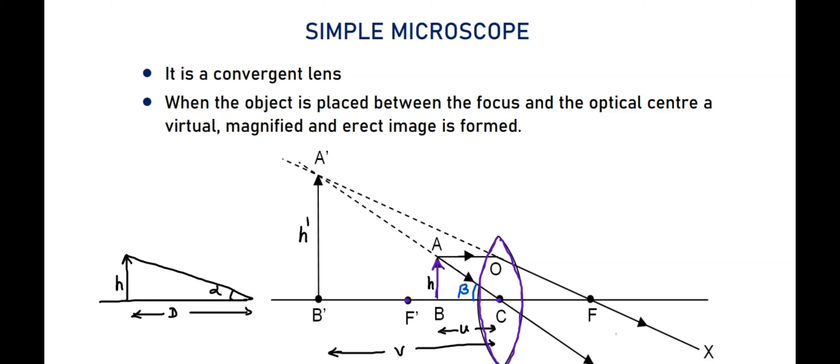If you draw the ray diagram, one ray passes parallel to the principal axis, undergoes refraction and passes through the focus. One more ray passes through the optic center and travels without any deviation. But these two refracted rays are divergent rays. If you extend these divergent rays in the opposite direction, they will appear to diverge from a point A dash here.